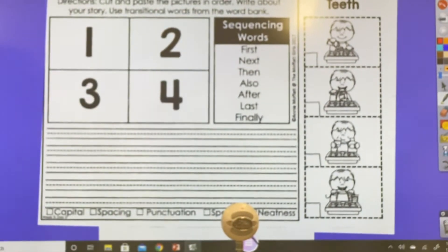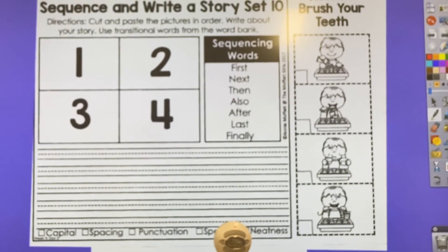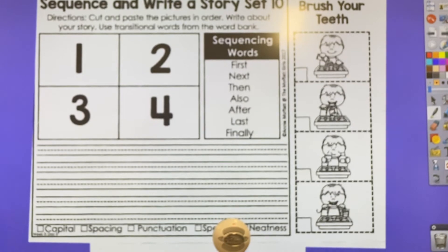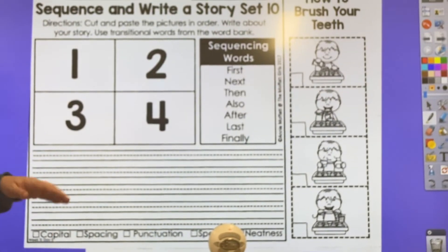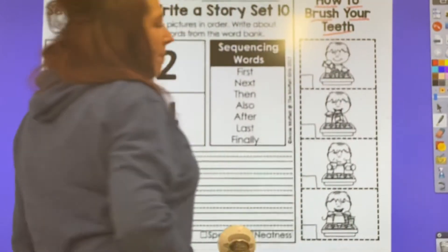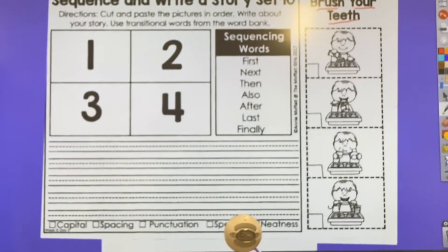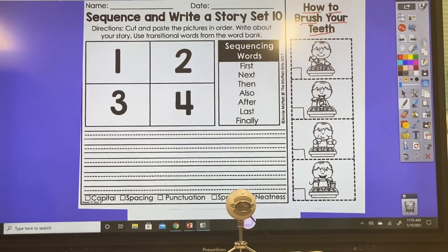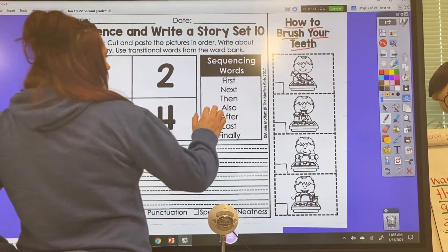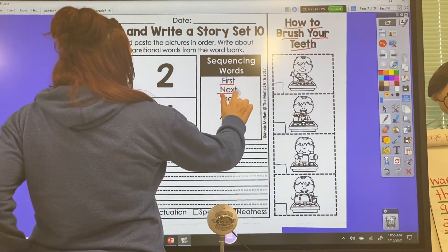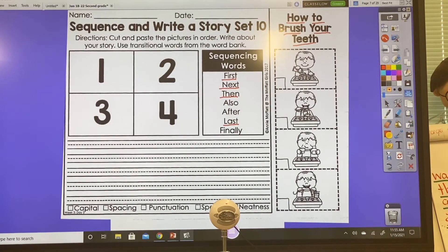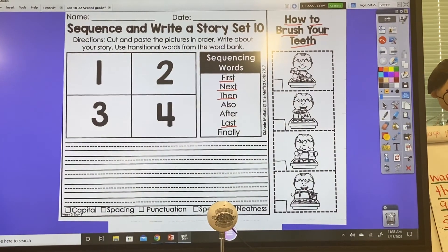This is our last page for our Tuesday, and it's your last writing, I believe. And this one is also a sequencing one. The title is how to brush your teeth. So I believe you all do this every day, so this should be an easy one to write about. You're going to use your transitional words: first, next, then, and last. If you want to use those other words also, after, finally, you are more than welcome to.